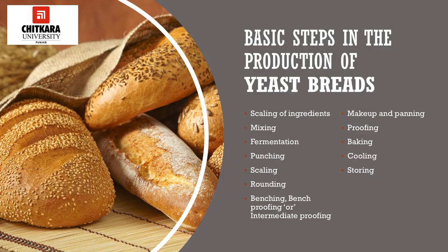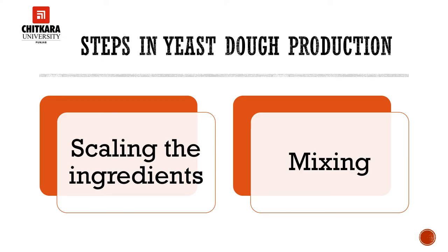There are 12 basic steps in the production of yeast breads. These steps are generally applied to all the yeast products with variation depending on the particular product. These are: scaling of the ingredients, mixing, fermentation, punching, scaling, rounding, benching, bench proofing or intermediate proofing, makeup and panning, proofing, baking, cooling and storing.